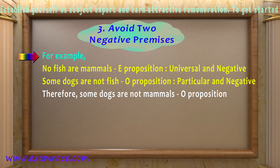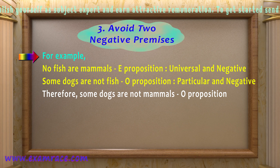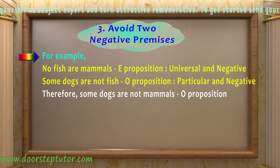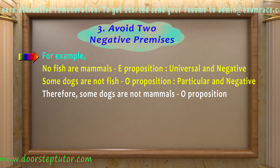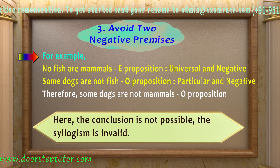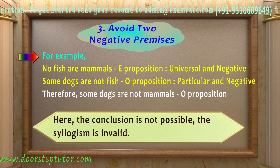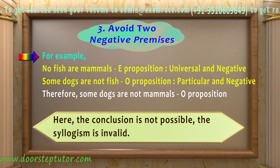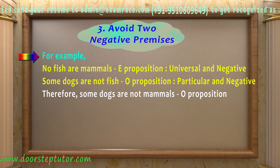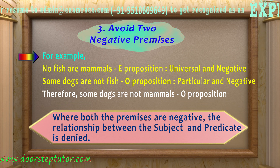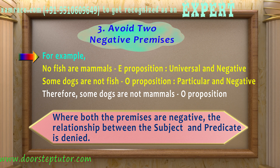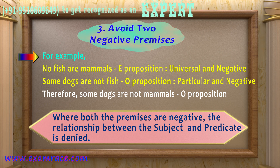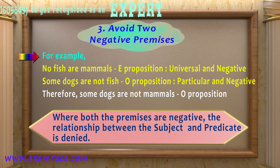In this syllogism, the major premise is an E proposition (universal and negative), the minor premise is an O proposition (particular and negative), and the conclusion is an O proposition. The conclusion 'some dogs are not mammals' is not possible, making the syllogism invalid. When both premises are negative, the relationship between the subject and predicate term is denied, and therefore the syllogism becomes invalid.